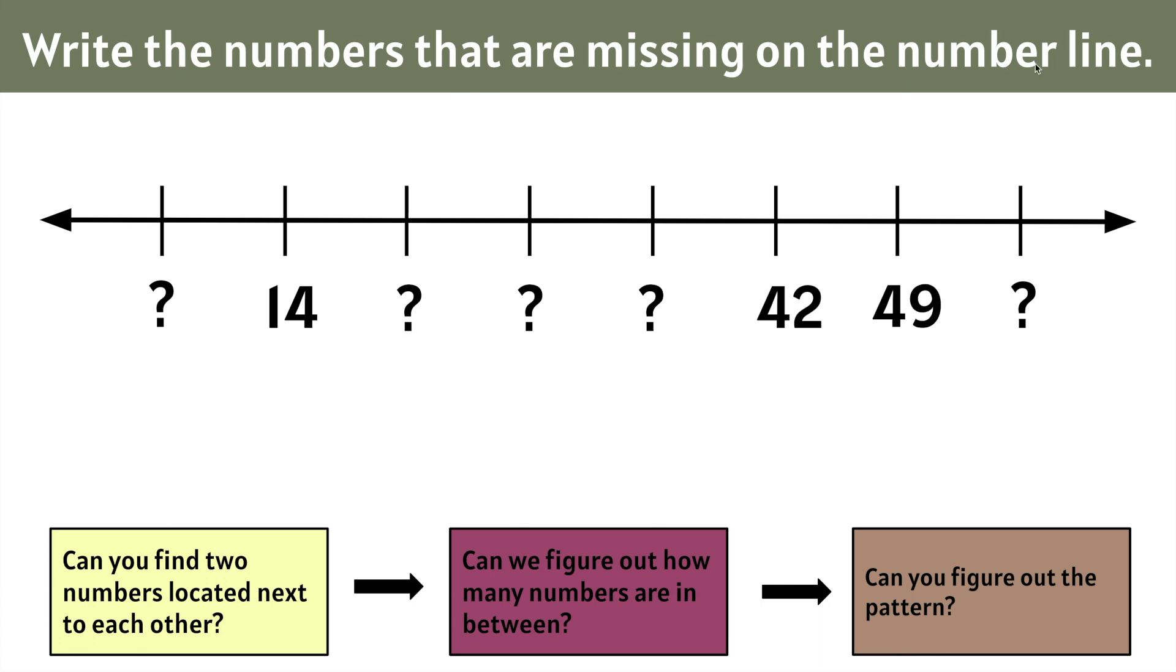Let's write the numbers that are missing on the number line. We have missing numbers here, here, here, and at the very end. Let's start by locating two numbers right next to each other. We notice that the only numbers right next to each other are the 42 and the 49. Now let's figure out how far apart 42 is from 49.